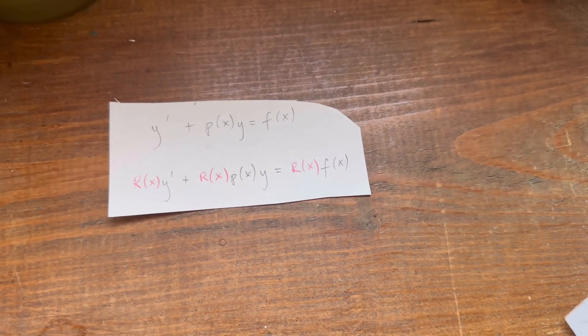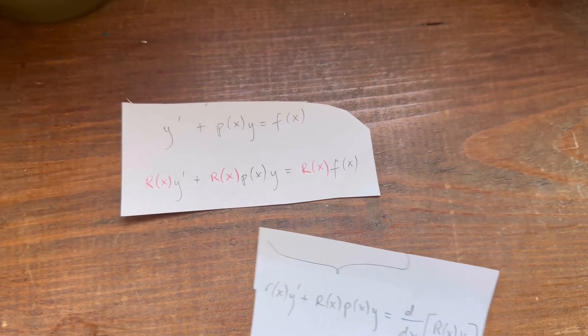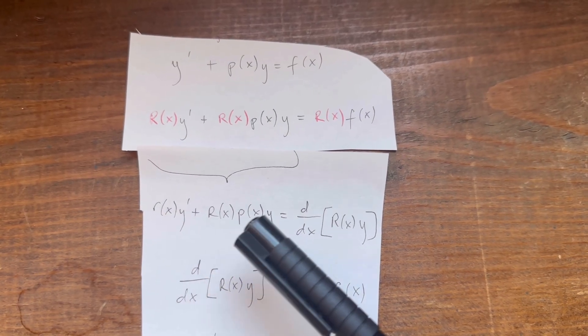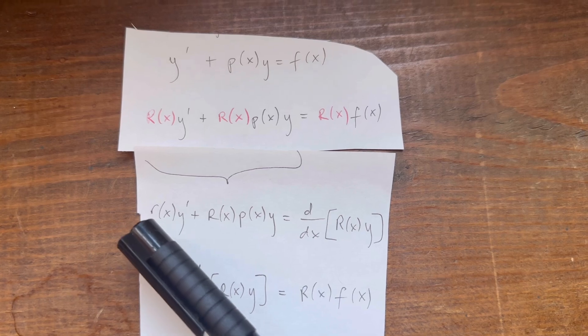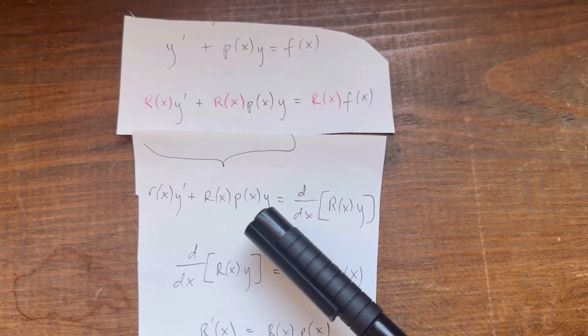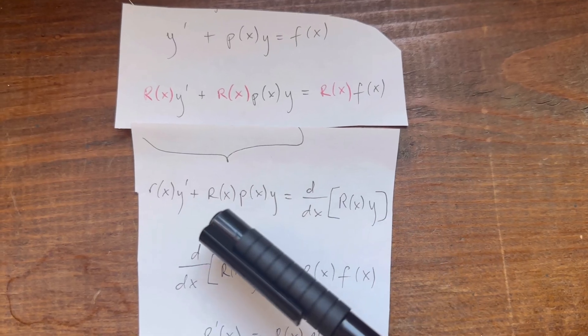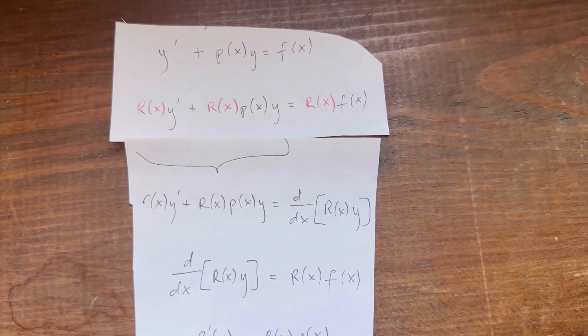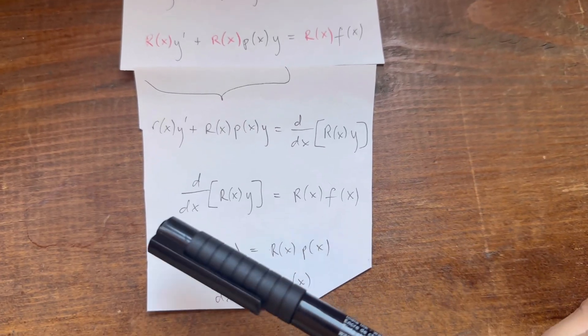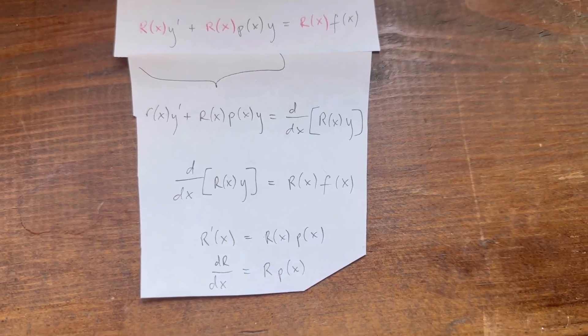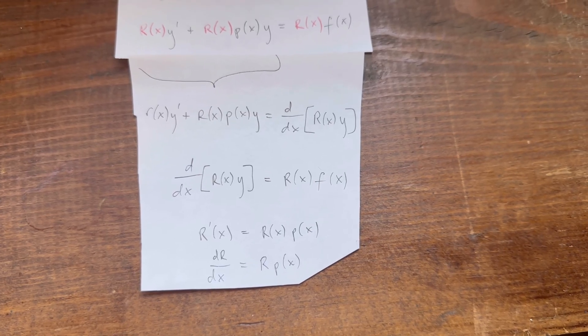Now I want you to look at the left-hand side. Notice that the left-hand side is essentially a product rule where you have r(x)y' plus r(x)p(x)y. So you have the first term times the derivative of the second plus the derivative of the first term times the second term. In other words, r(x)p(x) is some form of the derivative of r. So let's explore what this r(x) is going to be.